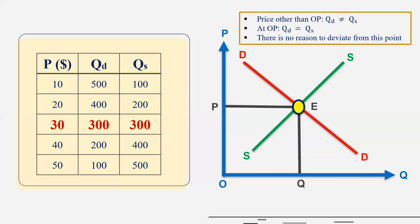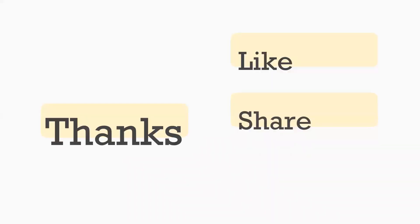So OP is our equilibrium price, E is the equilibrium point, and OQ is the equilibrium quantity. So we can explain the market equilibrium through demand and supply curves. If you find this video useful, kindly like, share, and subscribe to our YouTube channel, Crack Economics and Statistics. Thank you.